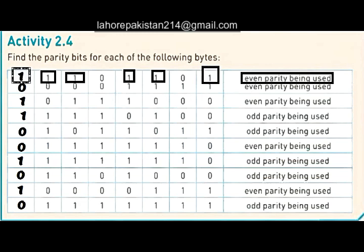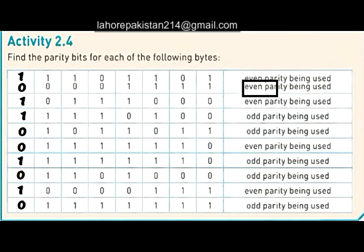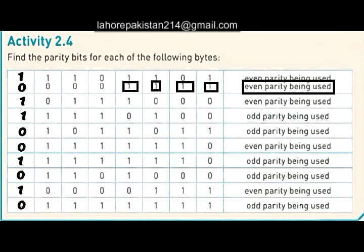Now let's do the second part. In the second part we need to make even parity. Counting the number of ones: one, two, three, four — which is already even. So we do not need to add one; we will add a zero in the beginning.